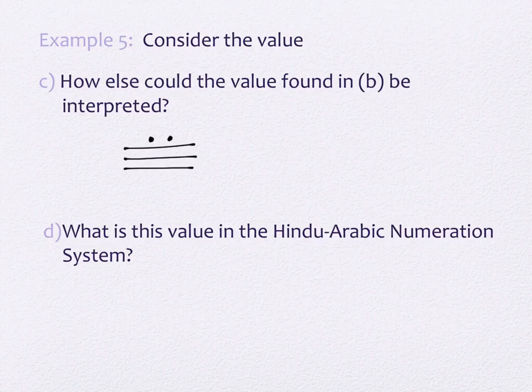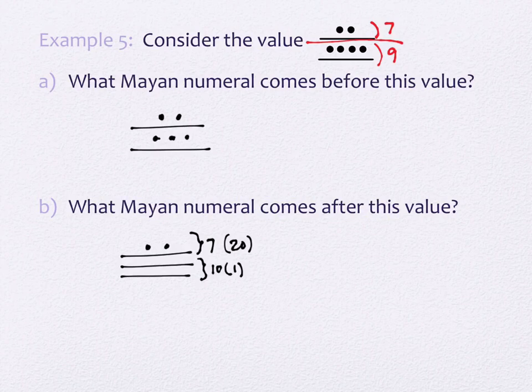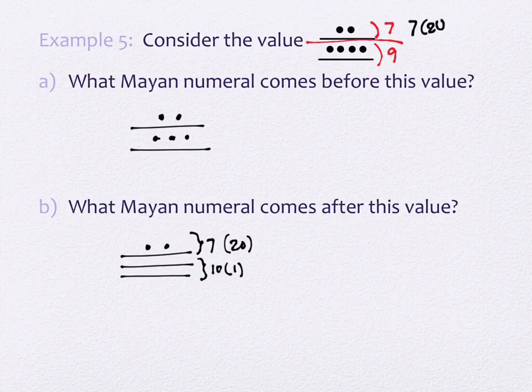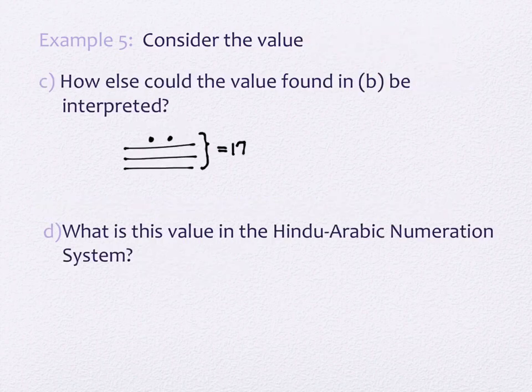If you just saw this from the get-go, what number might you believe that this is actually worth? 17. But that's not the number we intended it to be. We intended it to be the number that came after something that was 7 times 20 — 7 in the 20 spot and 9 in the 1 spot. That's well over 17 already, right? If you imagine having 7 $20 bills, that's more than $17. So there's some confusion in this, and that's not ideal.